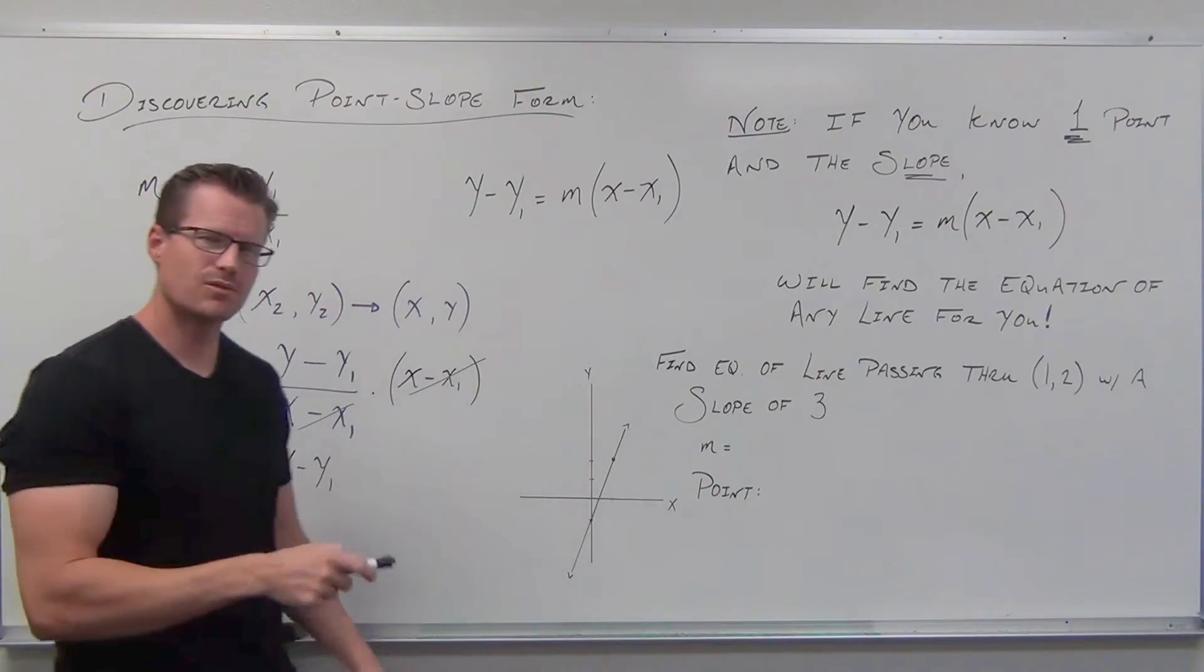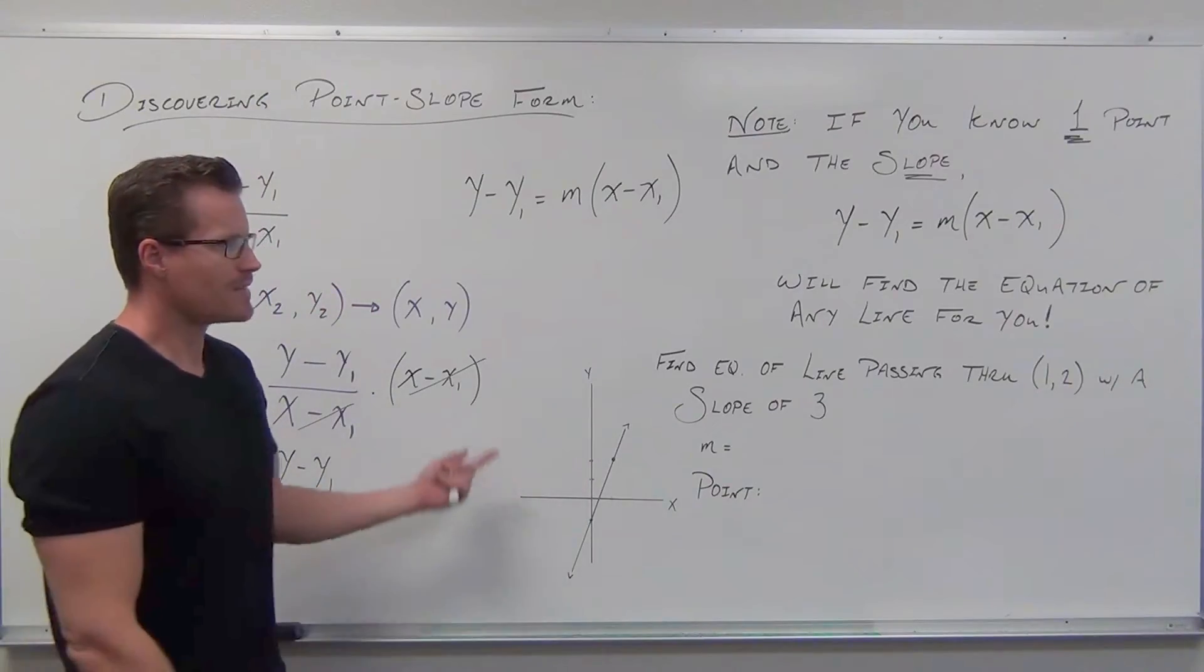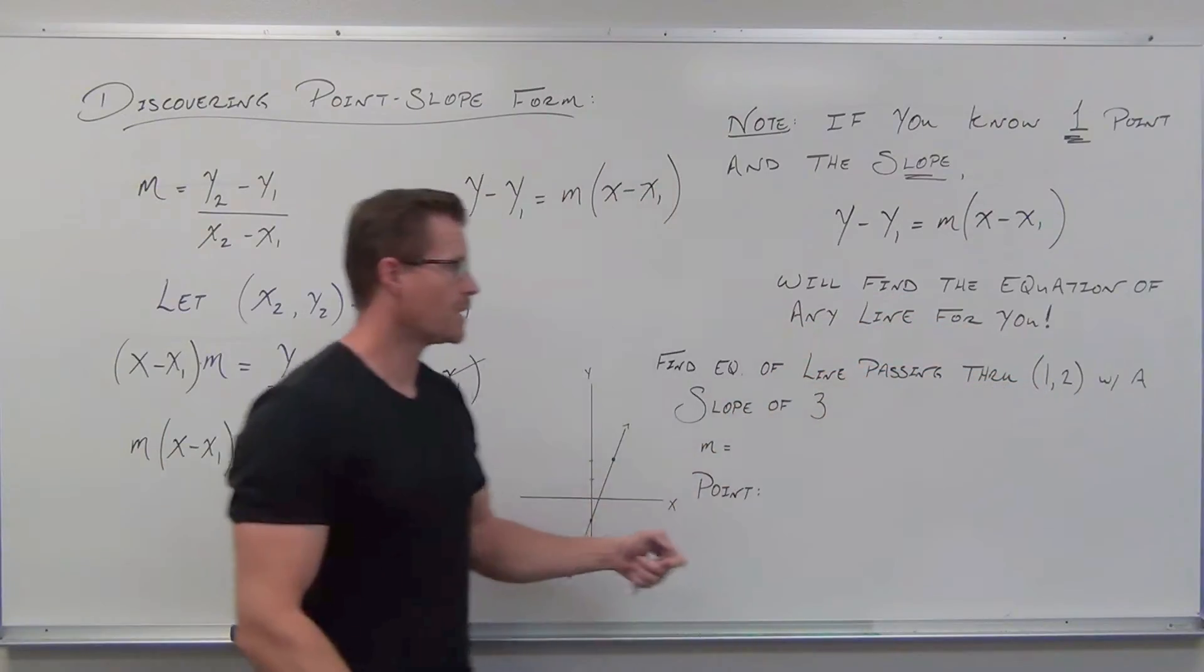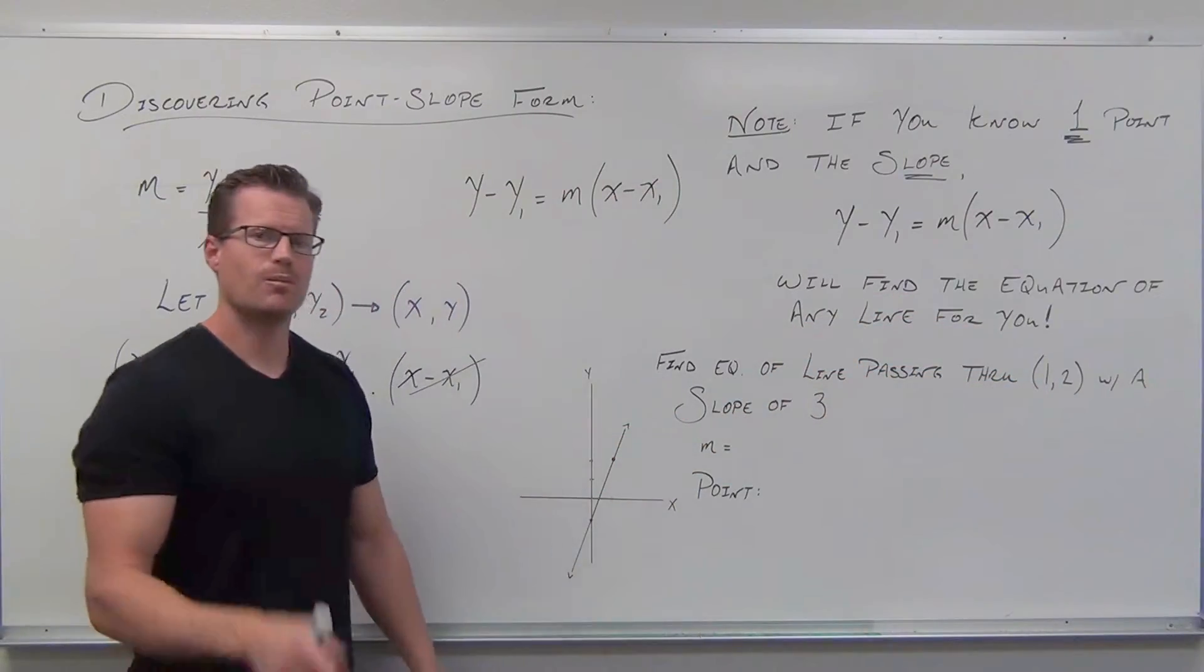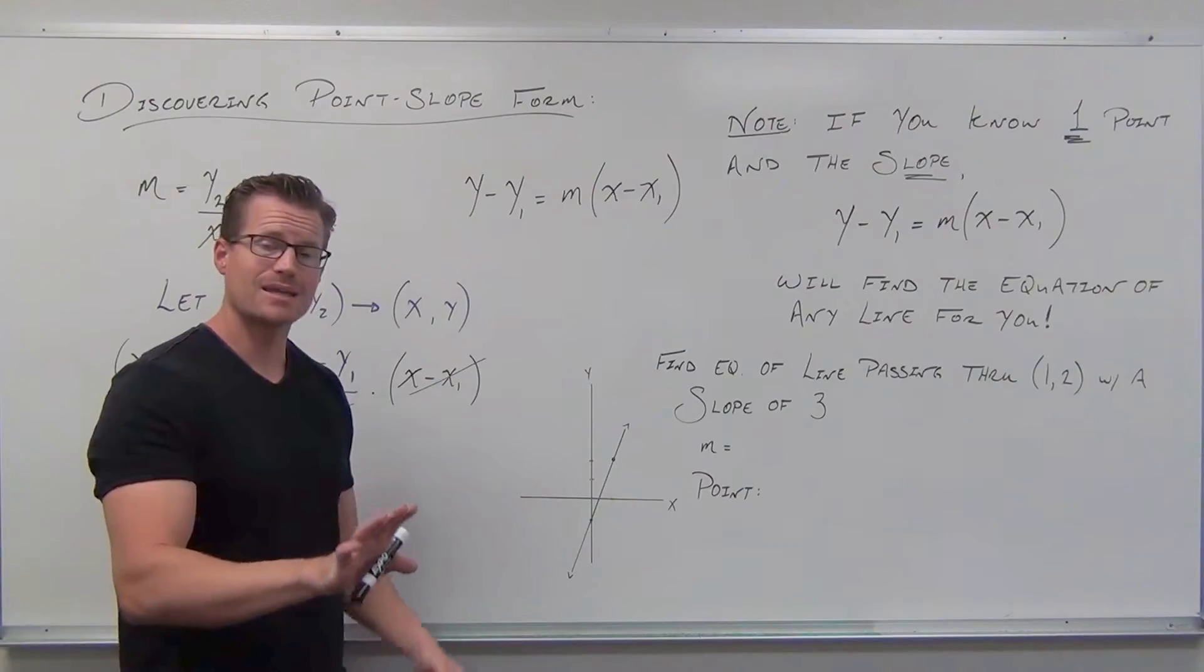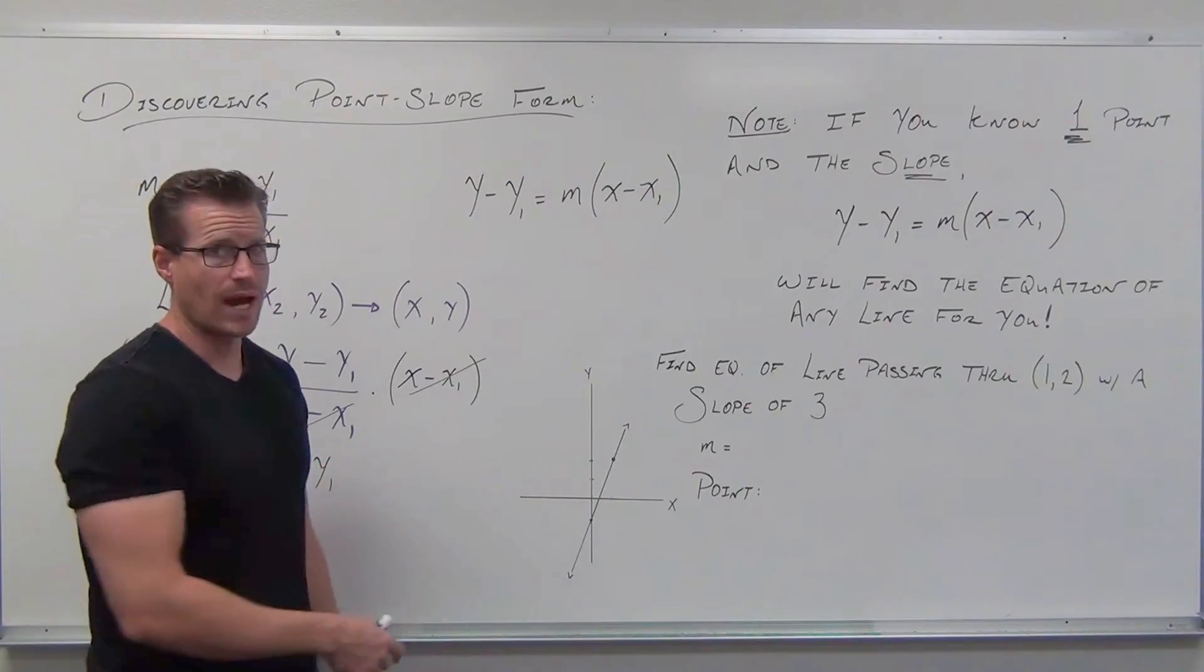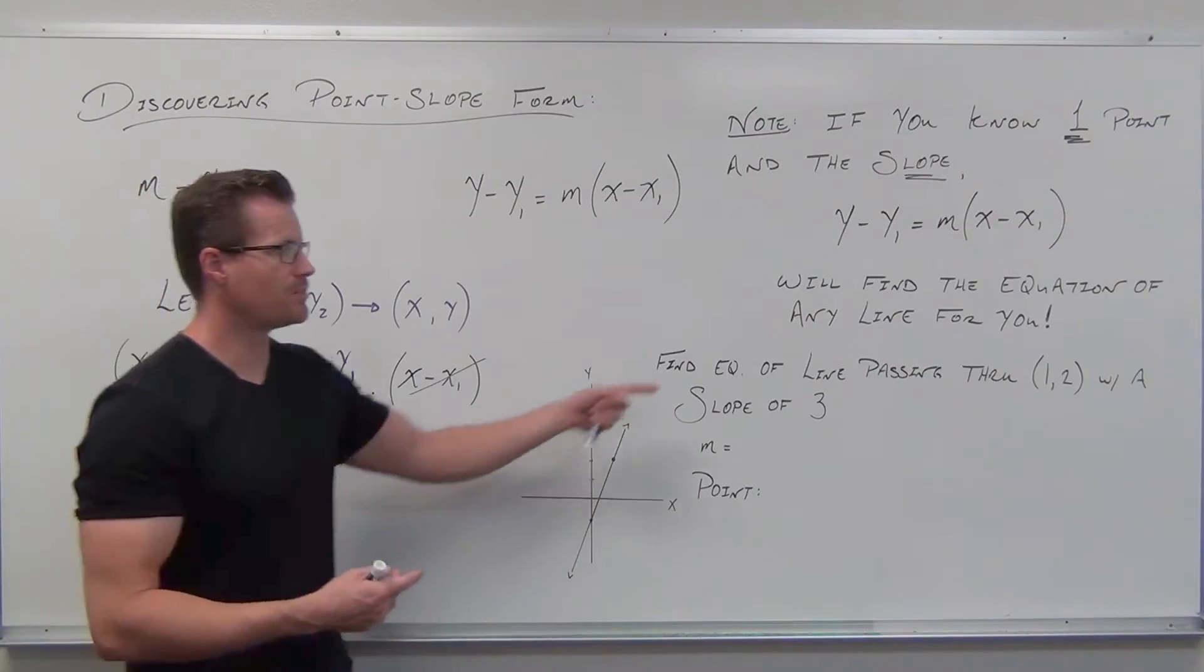Now, let's do an example. Let's find the equation of a line that passes through that point one, two, and has a slope of three. Now, by the way, before we go any further, I can give that to you verbally like I've done, or it can be given to you as a graph.